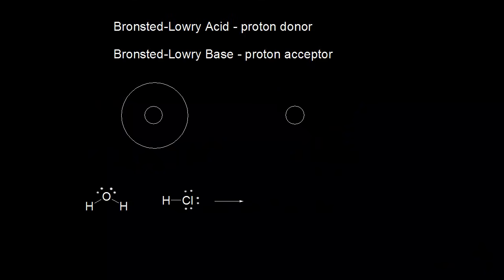Let's look at two definitions for acids and bases: Brønsted-Lowry and Lewis. We'll start with Brønsted-Lowry. A Brønsted-Lowry acid is a proton donor, and a Brønsted-Lowry base is a proton acceptor.